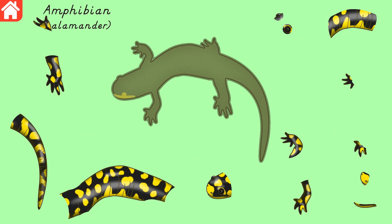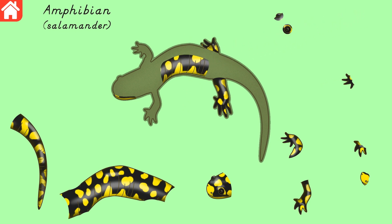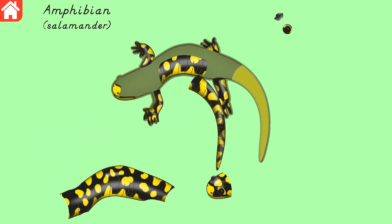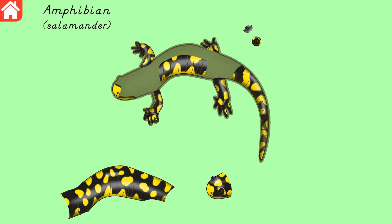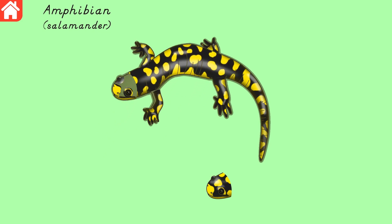Find the animal puzzle piece that matches the blinking image. Mouth, hindlegs, costal grooves, toes, nostrils, forelegs, tail, eyes, body, head.